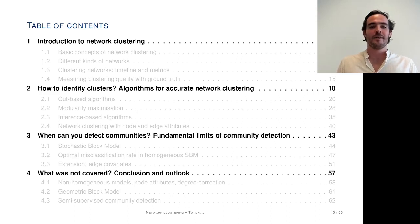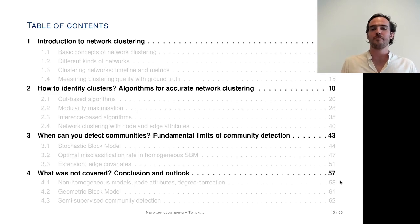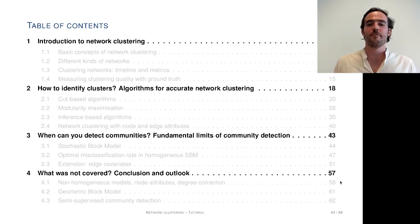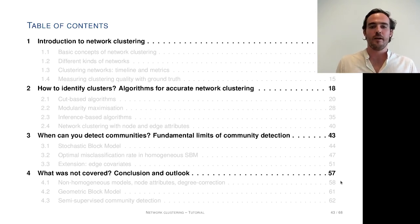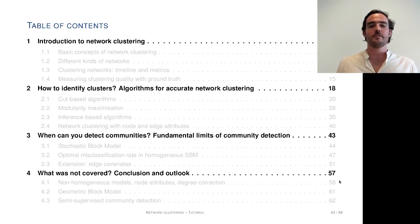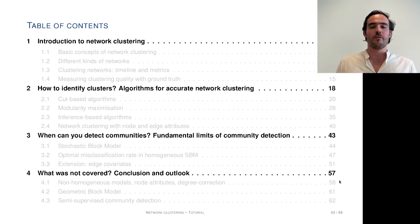Welcome back everybody. This is the third part of the tutorial. In this section we're going to discuss fundamental limits of community detection and answer the question: when can we detect communities? To answer this question we use a model — the stochastic block model that Daniel already mentioned in section 2.